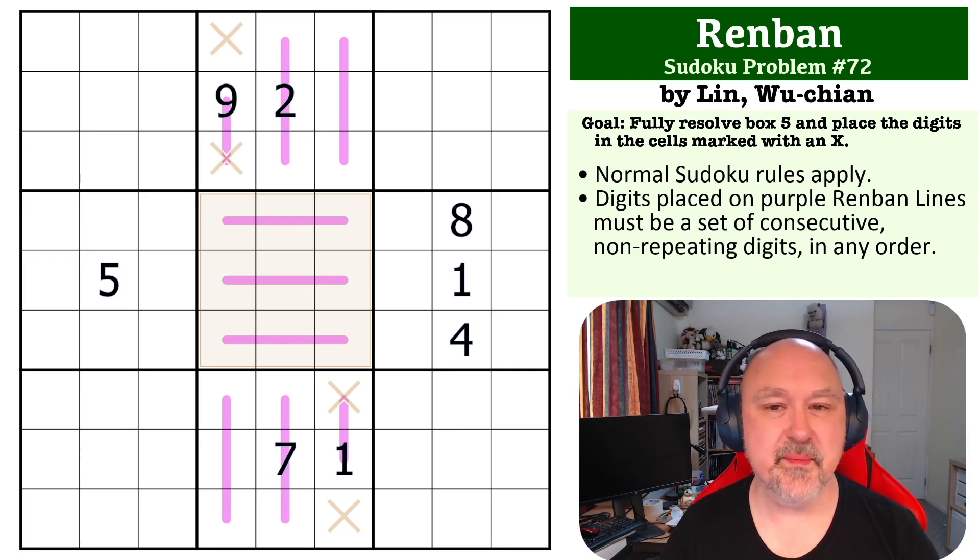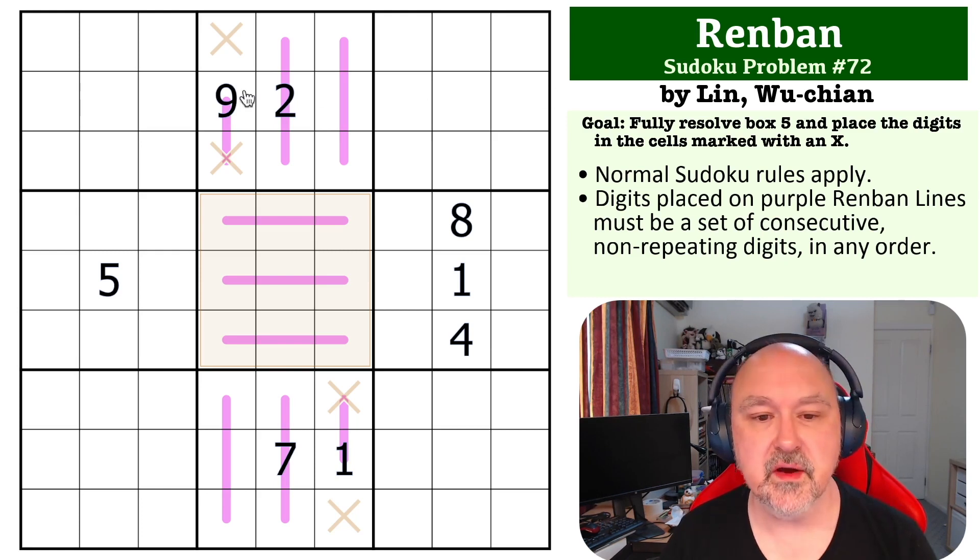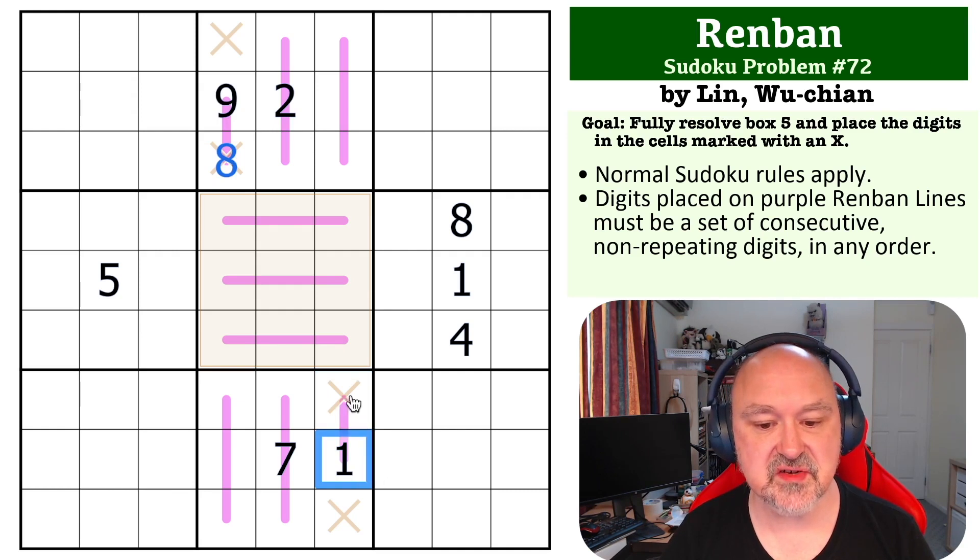Okay, so there's a fair bit going on in this one, but none of the steps are particularly tricky on their own. The first thing you can see is a two-cell long Renban line with a 9 on it. The only thing that is consecutive with 9 is 8. Down here you can see there's a two-cell long Renban line with a 1 on it, and the only thing consecutive with 1 is 2.